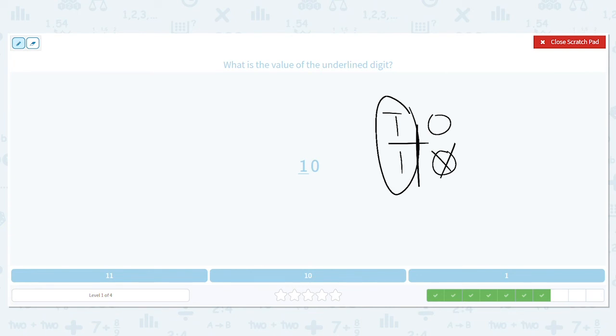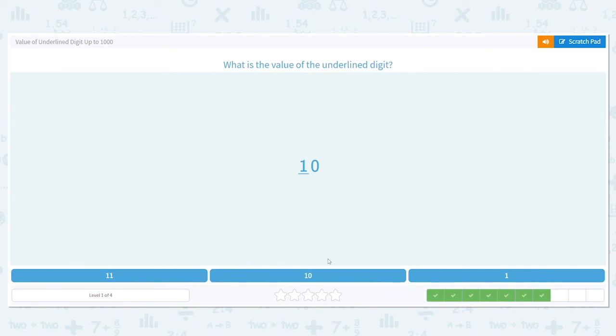We have a group of ten, so what is the value of that one? It is one ten. It's not just one one. If it were one one, it would be in the ones place, but it's one group of ten, so the answer is ten.